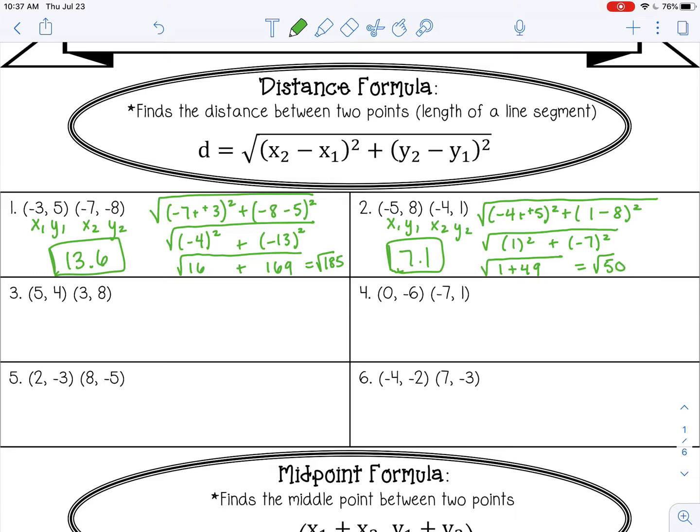I'll do one more together. 3 minus 5, 8 minus 4. So that's negative 2 squared plus 4 squared. So 4 plus 16, which is the square root of 20, which gives you about 4.5. And I'm just rounding to the tenths place. Pause the video now and go ahead and try 4, 5, and 6 by yourself, and then we'll check it.